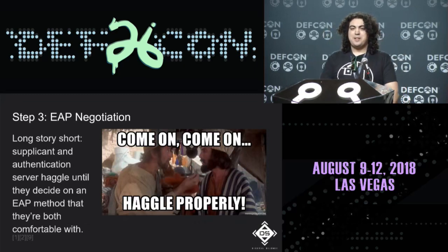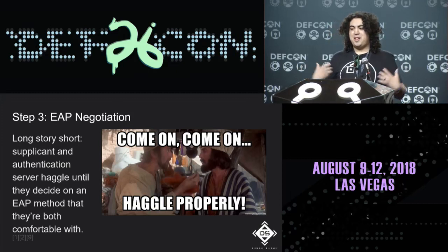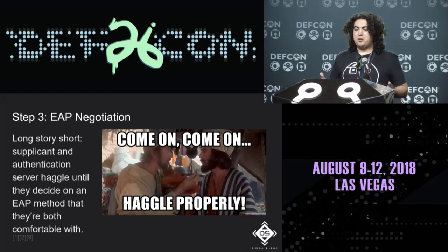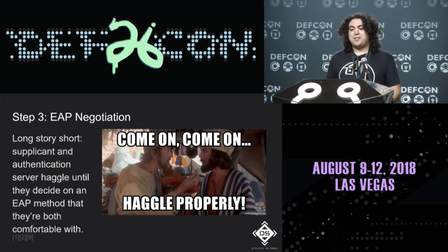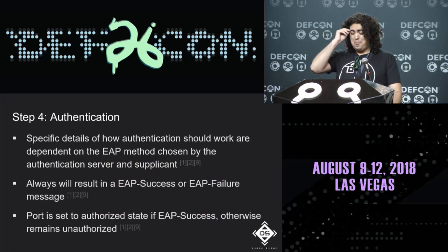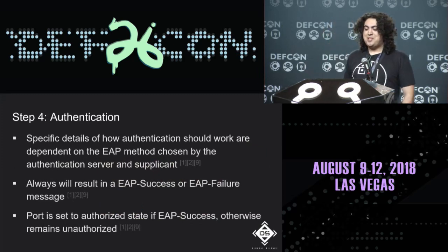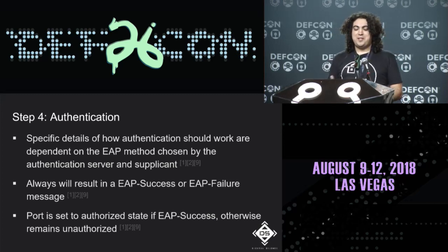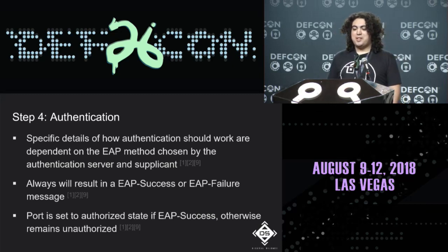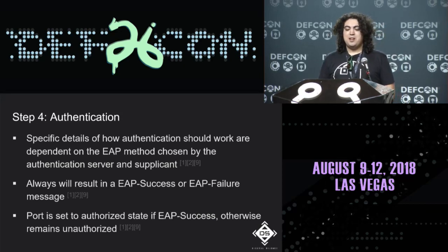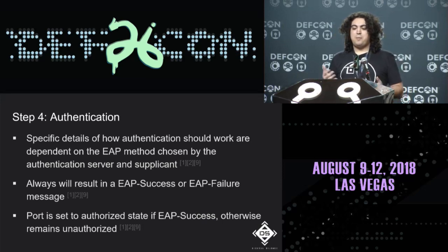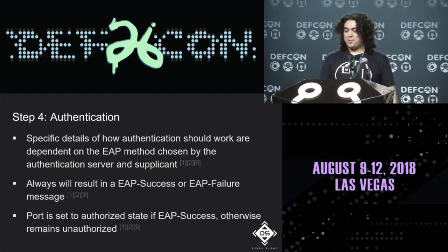802.1X implements authentication using EAP — extensible authentication protocol — which is more of an authentication framework defining message formats. Think of it as a black box: you put in inputs and get either EAP success or EAP failure. In step three, the authentication server and supplicant negotiate an EAP method. In step four, authentication is performed using that chosen method, resulting in EAP success or failure. On success, the port is set to authorized; on failure, it may be shut down entirely.